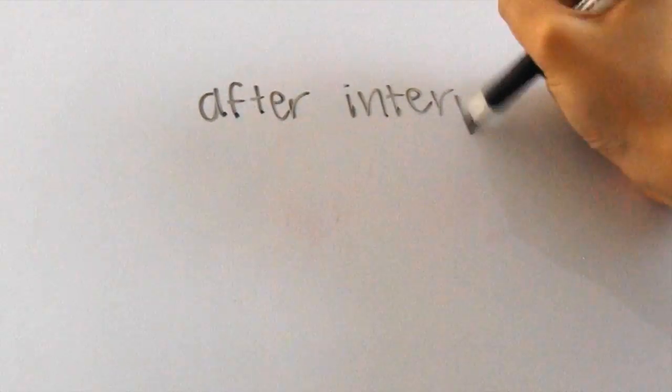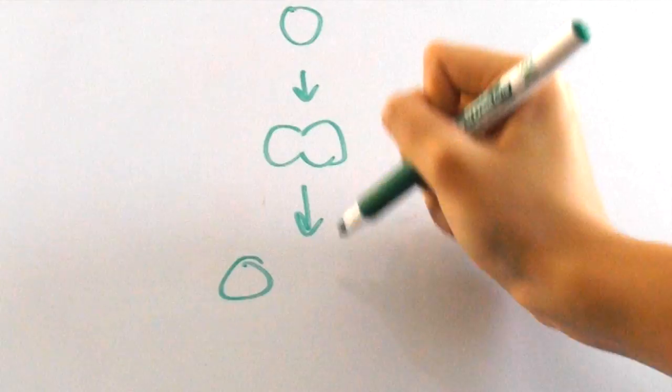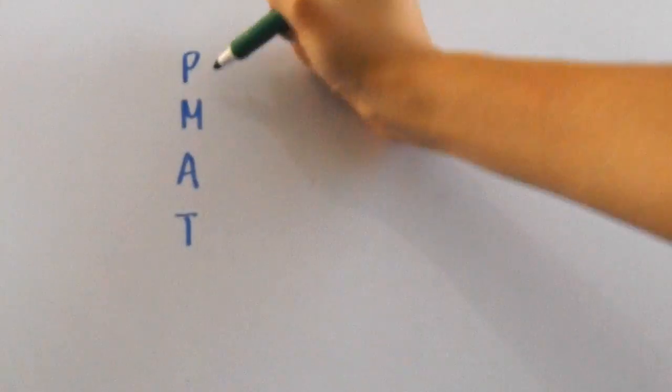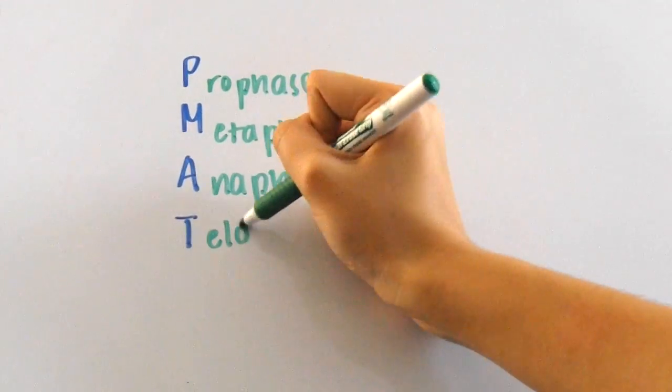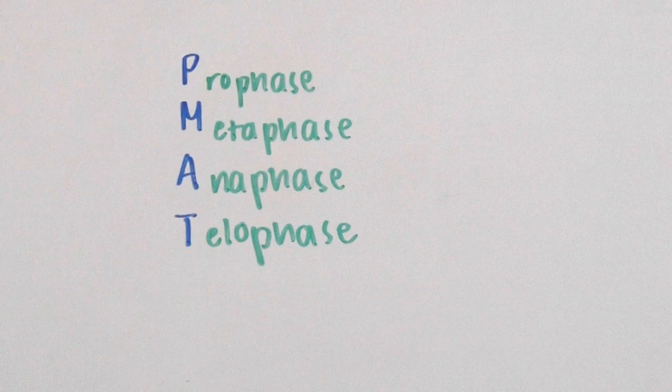Mitosis can happen after the cell finishes interphase, which is when it is replicating its DNA and preparing to divide. When this is done, mitosis occurs, and scientists have divided mitosis into several stages to make it easier to talk about. It's called PMAT: prophase, metaphase, anaphase, and telophase.